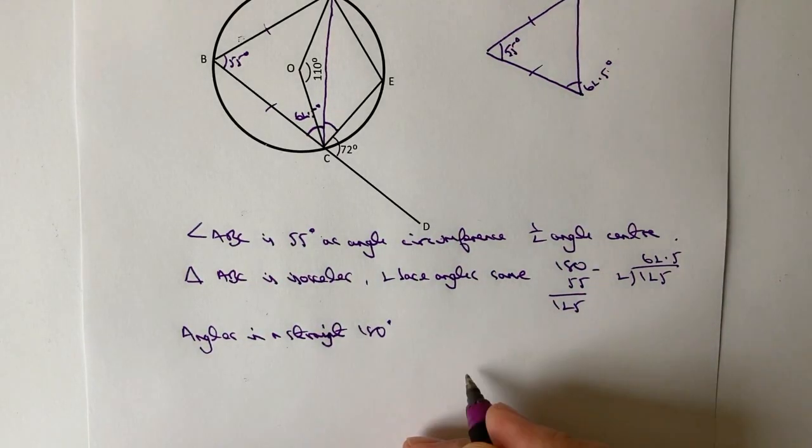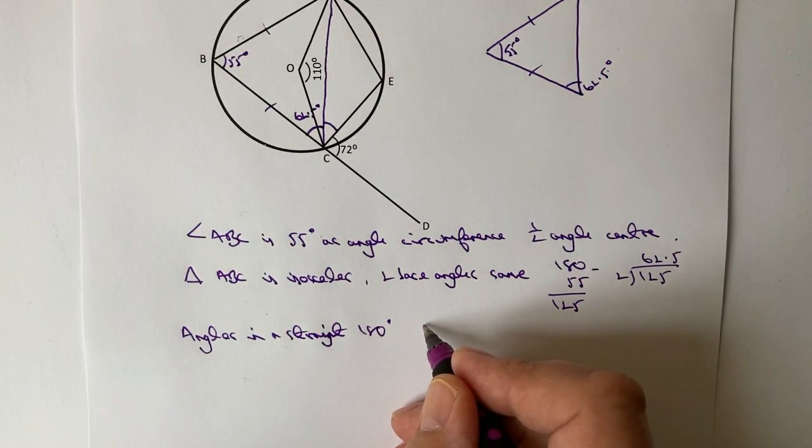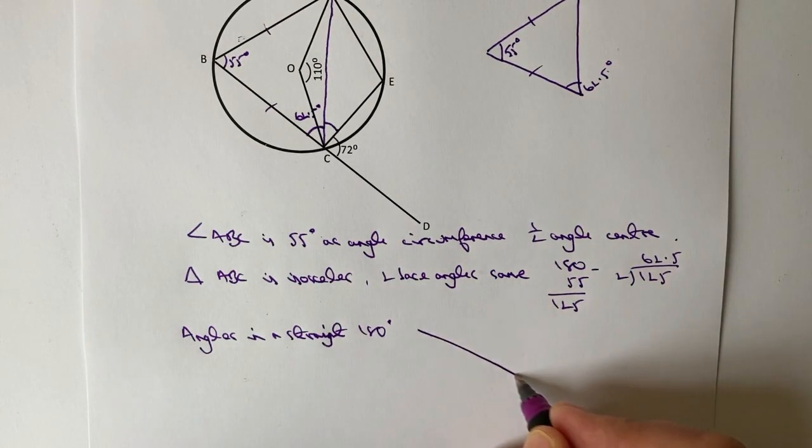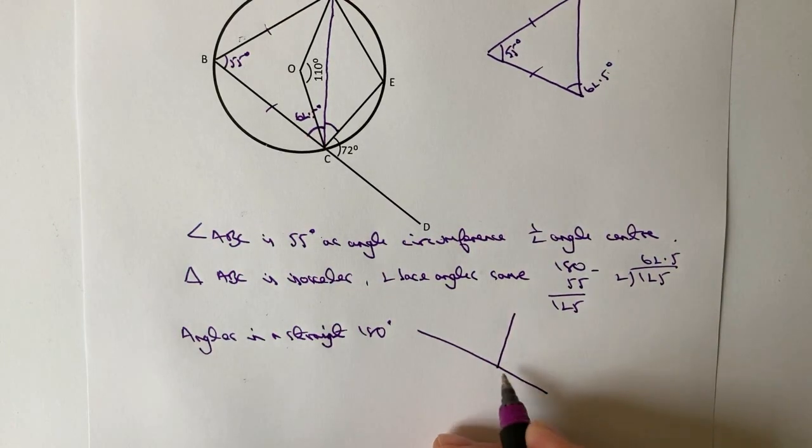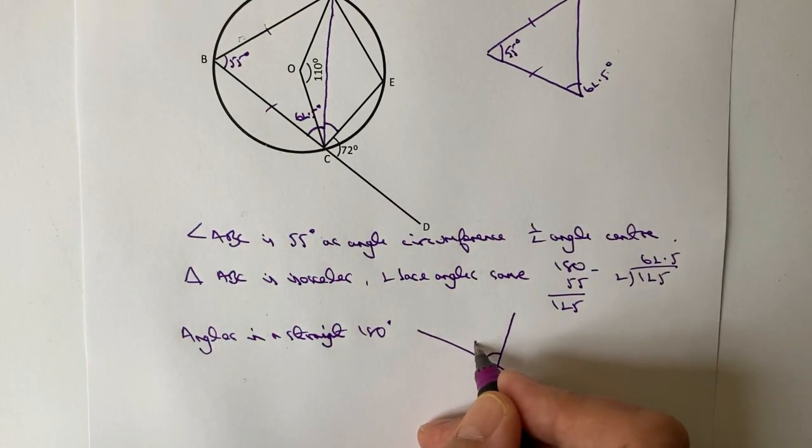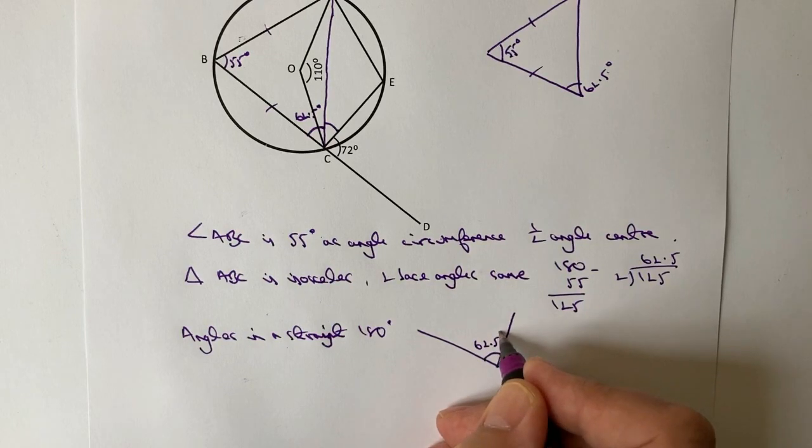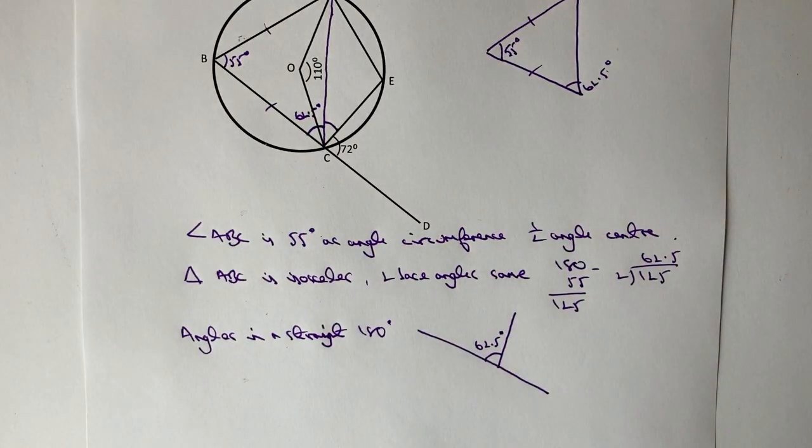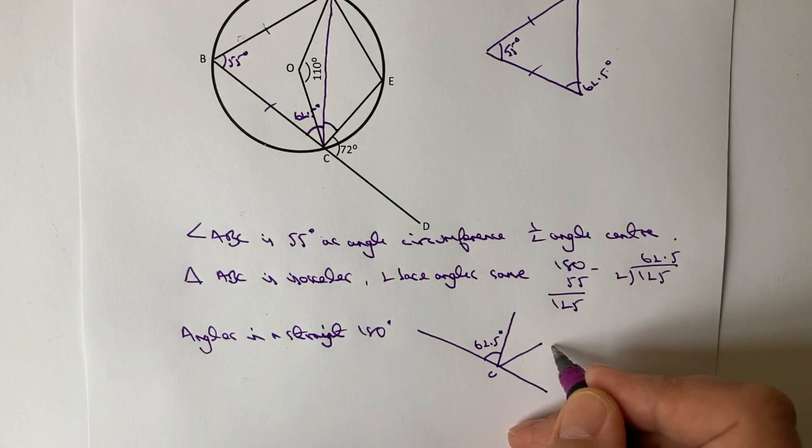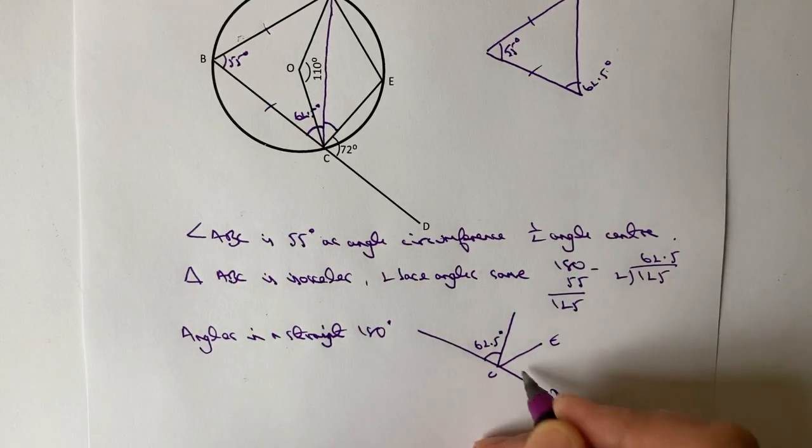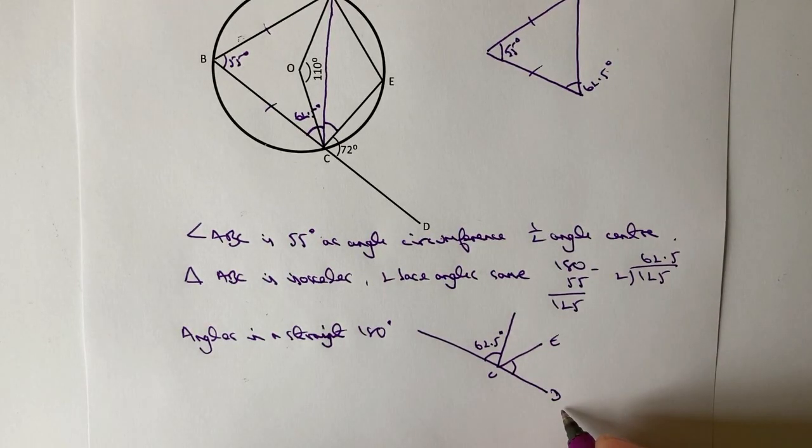Now, bearing in mind that what we're actually looking to achieve is the angle ACE. So it's this angle here. Now, if you look very closely, what we've got is a straight line. So the next part of this is we can say angles in a straight line are 180 degrees. So let me just see if I can draw that a little bit better for you. So if I put a line along like that, I've got my first part here, which is going to be 62.5 degrees, which is the base of the isosceles triangle.